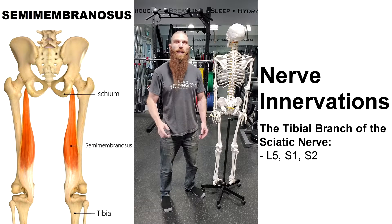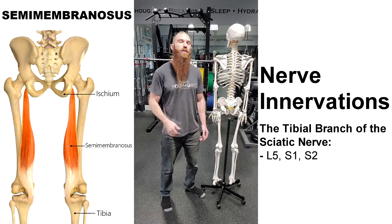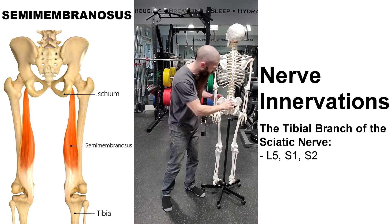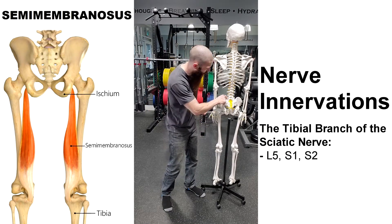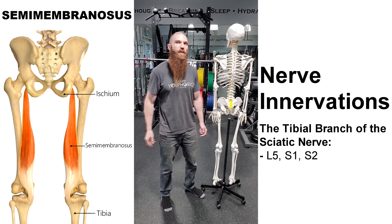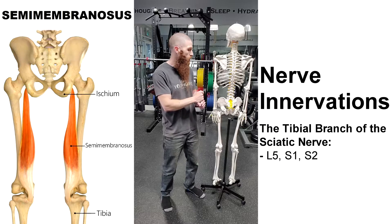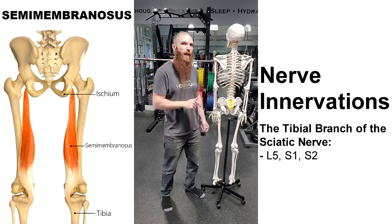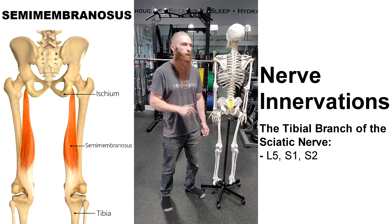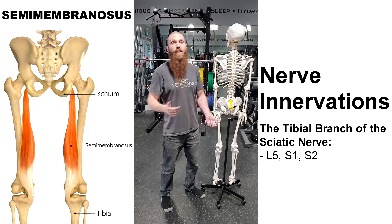The semimembranosus is innervated by the tibial branch of the sciatic nerve, and more specifically it's going to be your L5, S1, and S2 nerve roots. Here we have your L5, S1, and S2 nerve roots, and the reason that's going to be very important is because if we have any type of damage or compression to the nerves in those areas, the nerves are not going to be able to send the proper signal to the semimembranosus muscle to fire properly.